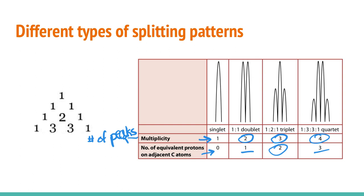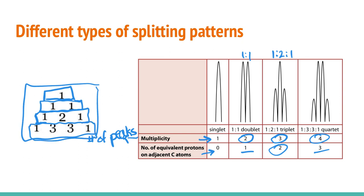In terms of the intensity of peaks, what's really neat is that the intensities are actually given by Pascal's triangle. If it's split into just one, then its intensity is one. But if it's split into two, then its intensity is the same and it's in a one-to-one ratio. If it's split into three, it's a one-to-two-to-one ratio. And then if it's split into four, it's in a one-to-three-to-three-to-one ratio. So that also gives you some really helpful information.